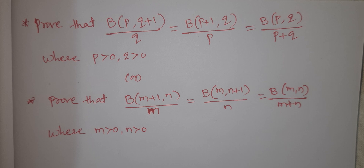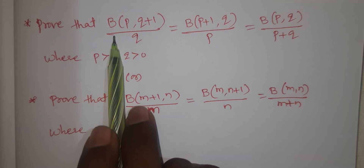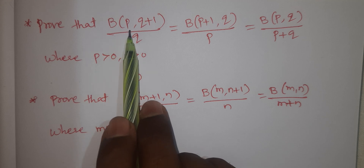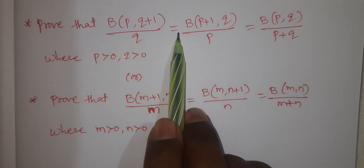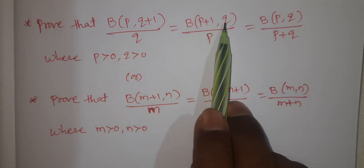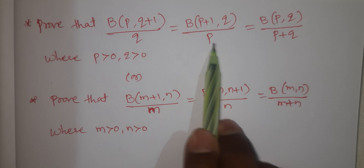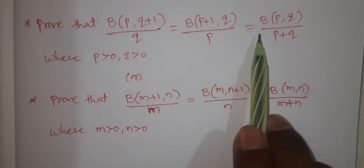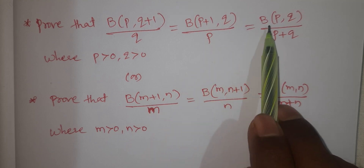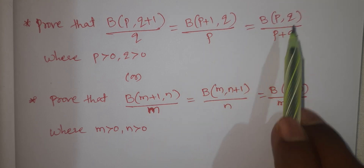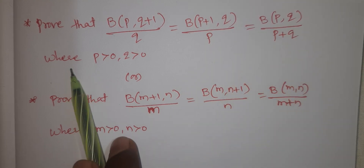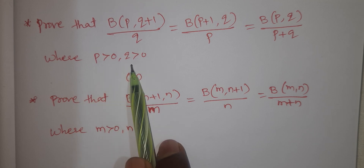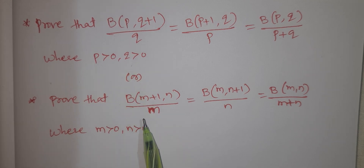See, this is very important. Prove that beta of p, q plus 1 by q, equals beta of p plus 1, q by p, equal to beta of p, q by p plus q, where p greater than 0, q greater than 0.